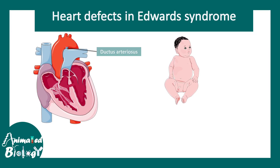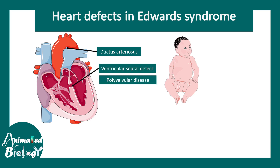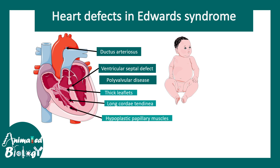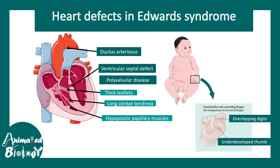Let's look at what heart defects they have. First of all, there is patent ductus arteriosus. There is a ventricular septal defect. There are polyvalvular defects, including thick leaflets, long chordae tendineae, and hypoplastic papillary muscles. All of these lead to problems in the circulatory system and decrease heart health, which is why they don't survive for long.